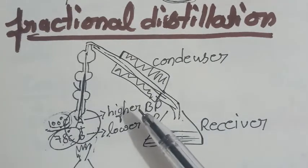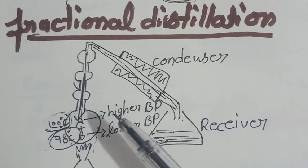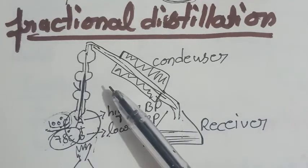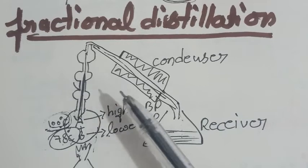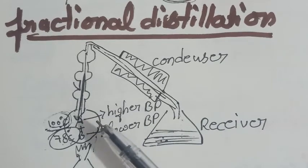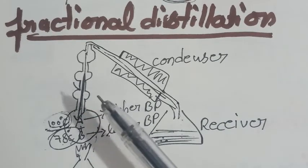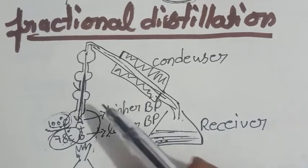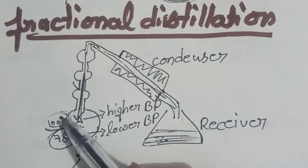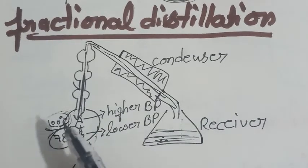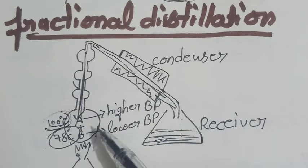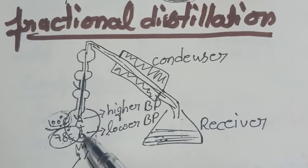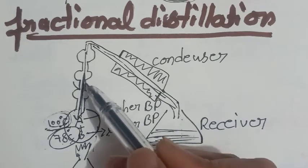So, student, this is the whole process. One more time, I am going to explain this. In fractional distillation, we separate liquids which differ in their boiling points by 20 degree Celsius or more. Means, the difference between these two substances should be 20 degree Celsius or more. The mixture of liquid is boiled in the flask, and the vapors are passed through the fractionating column.